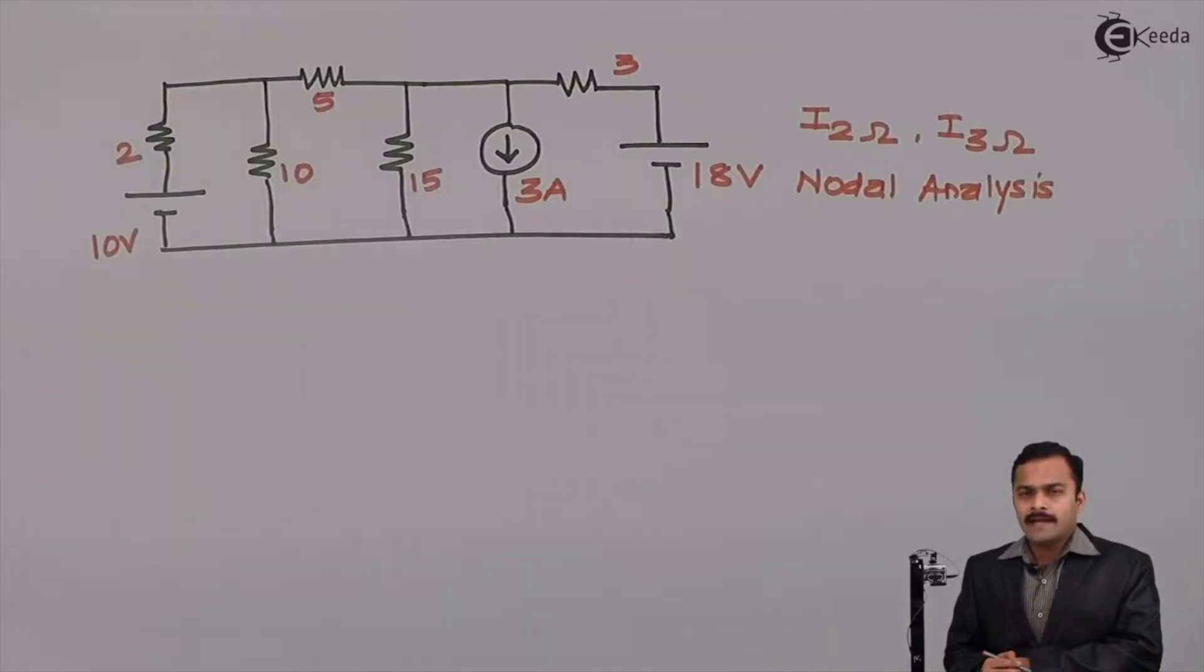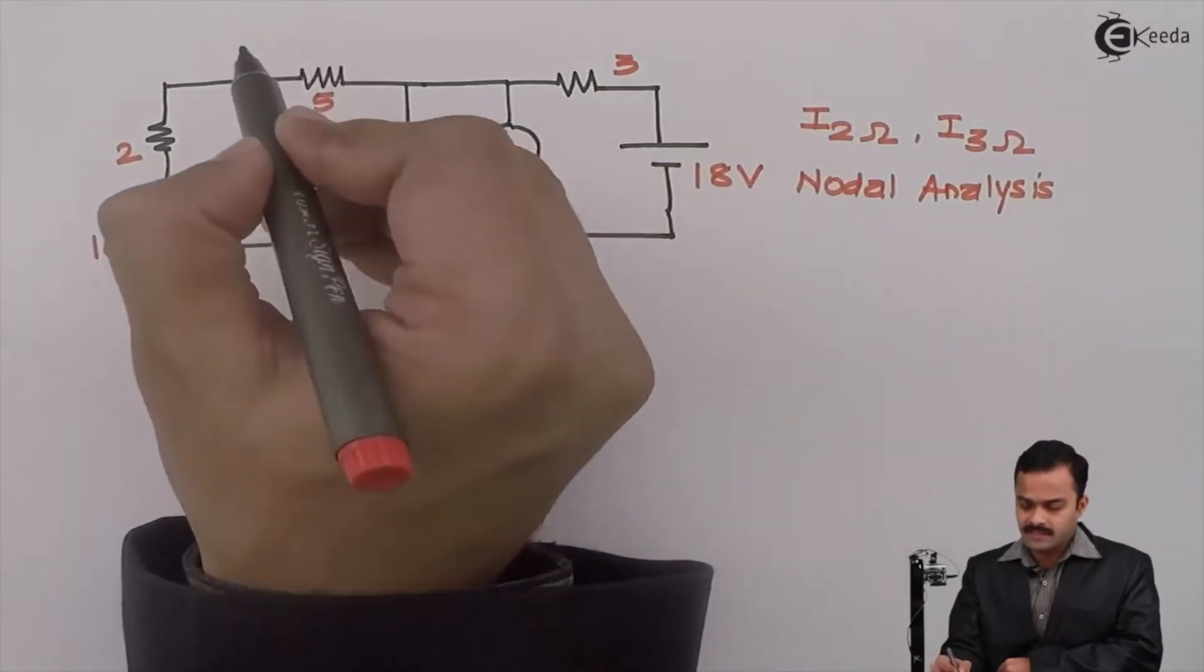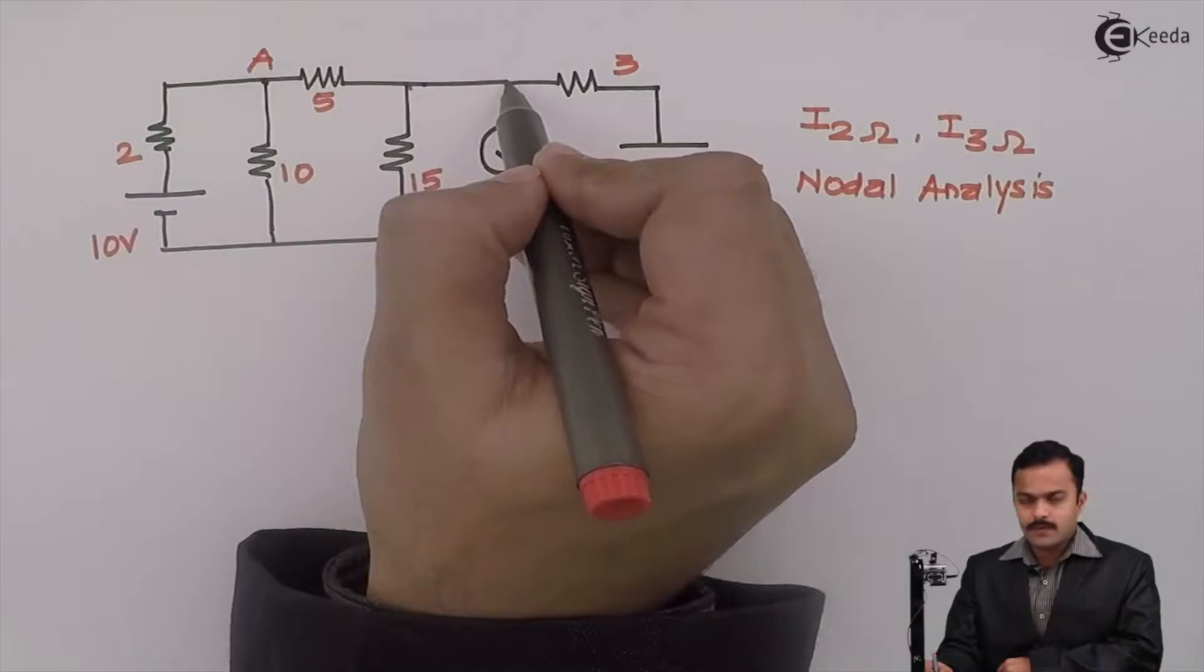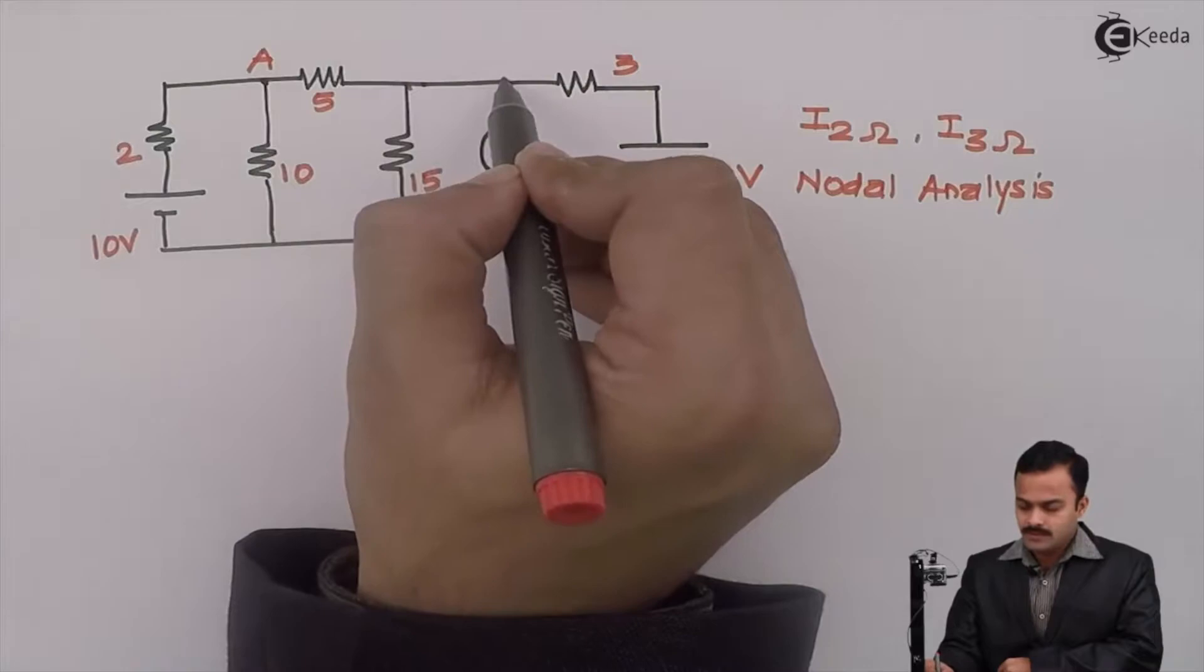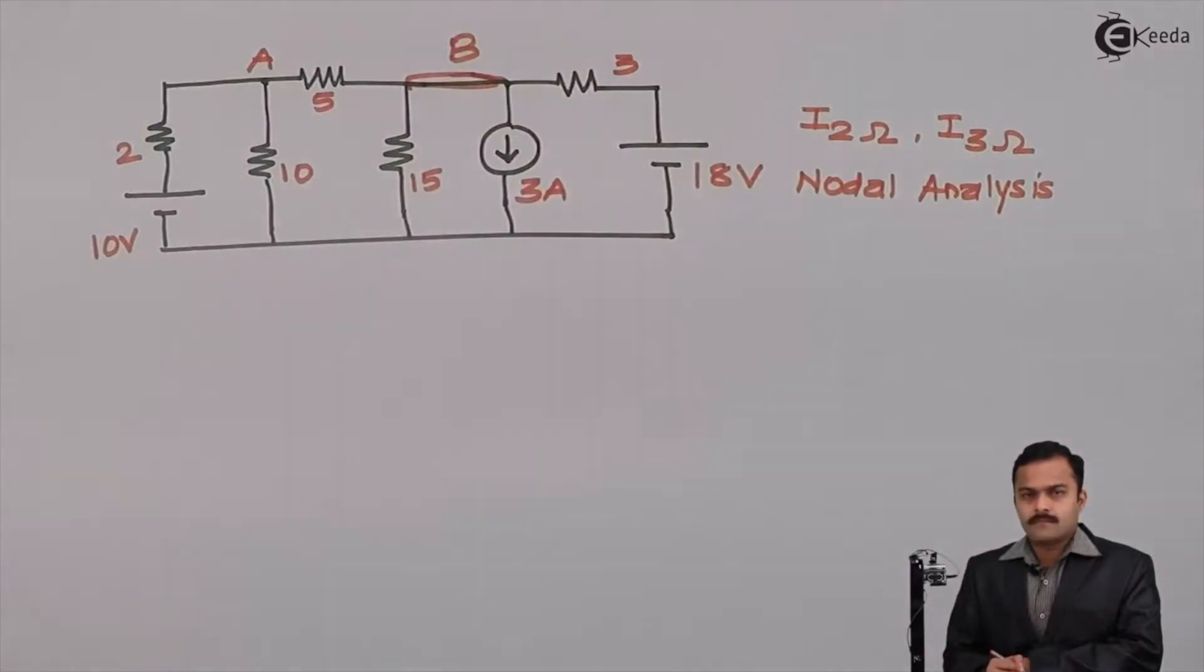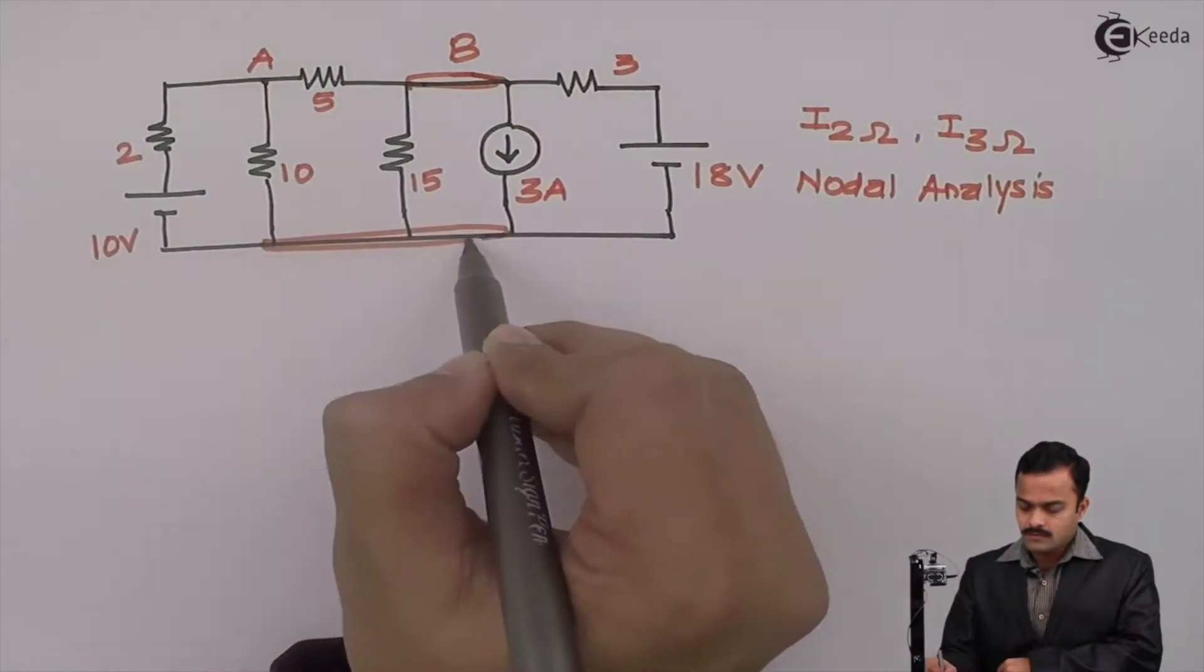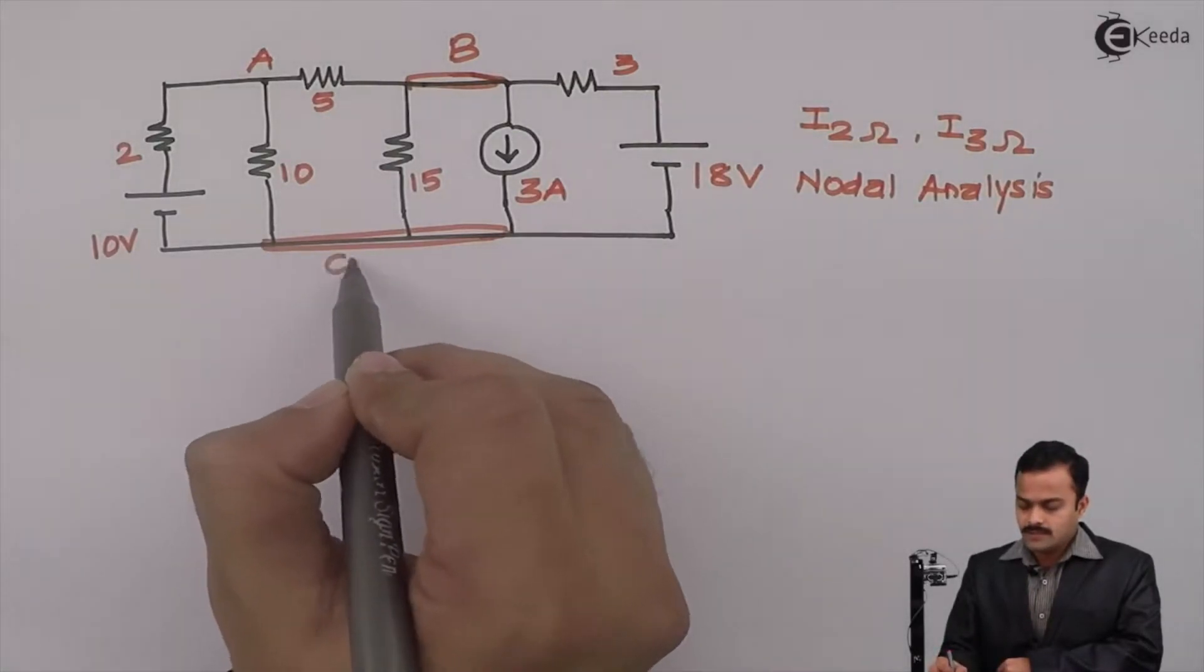First step is to identify how many nodes are there. This is a point which I will consider as a node because 1, 2, 3 branches are connected. Let's mark this point as A. This point and this point are the same point because nothing is connected between them, so I can consider the whole point as node B. And finally, all these branches are connected together forming a third node which I will consider as a reference, meaning the voltage of this node is 0.